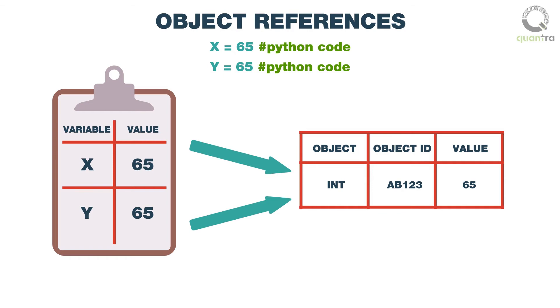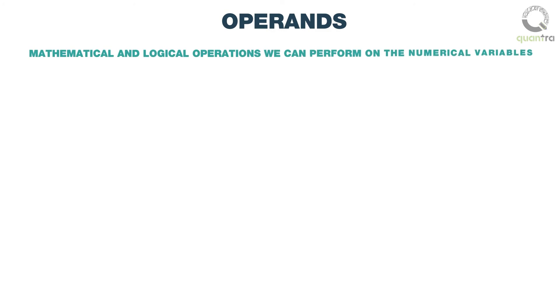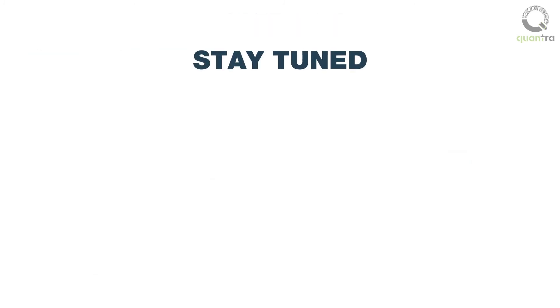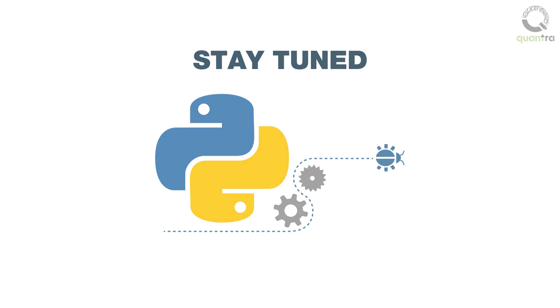We will explore more of this in the upcoming IPython notebook. Now coming to operands — they are basically mathematical and logical operations we can perform on numerical variables, such as addition, subtraction, etc. Here is a list of the built-in operands that Python supports. We will play with them in the upcoming IPython notebook.